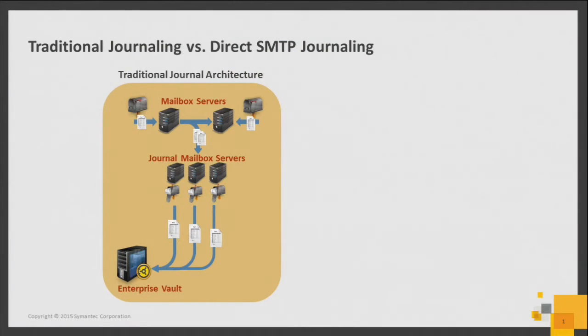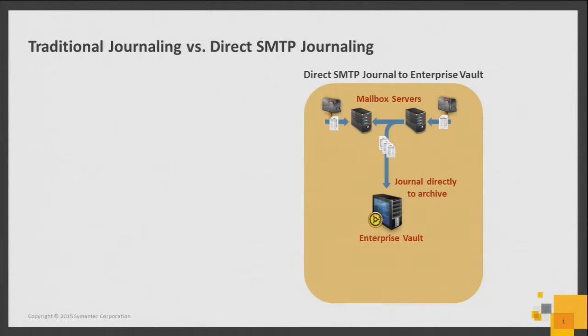Let's illustrate the benefits using some context from slides. Our primary use case is really journal archiving. Previously, before EV 1101, you would journal Exchange or Domino email into a journal mailbox, and then from that journal mailbox, you'd pull data into the Enterprise Vault archive. After Enterprise Vault 1101, Exchange or Domino can be configured to journal directly to Enterprise Vault. What does this mean for the customer? It means reduced complexity, reduced architecture requirements, and really a reduced total cost of ownership.